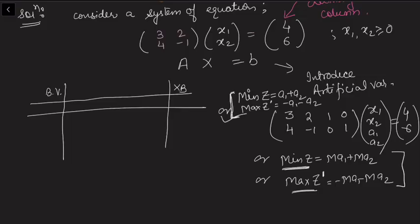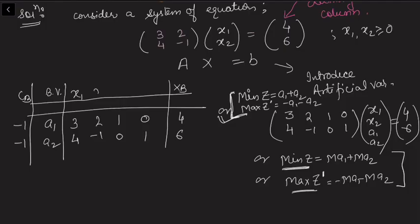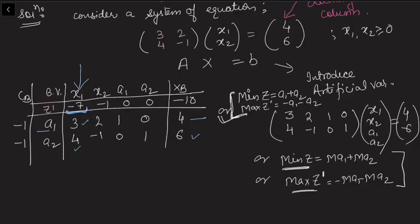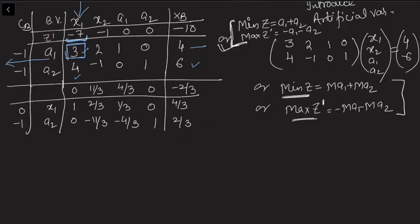For this problem I will apply the two-phase method with a maximization objective function. The cost coefficients for a1 and a2 are −1 each. Computing zj − cj gives [−7, −1, 0, 0] and z' = −10. Since this is a maximization problem, x1 enters the basis (most negative zj − cj). Checking ratios: 4/3 and 6/4, so artificial variable a1 leaves the basis and 3 becomes the pivot element. After the pivot, we compute the next simplex table.